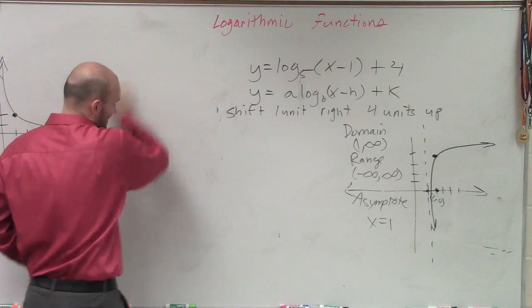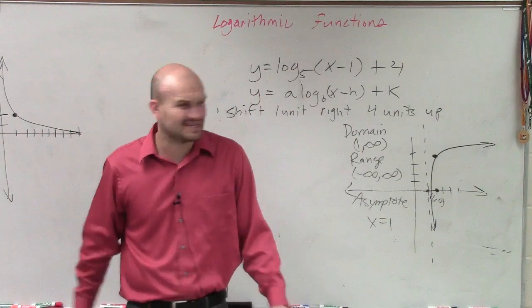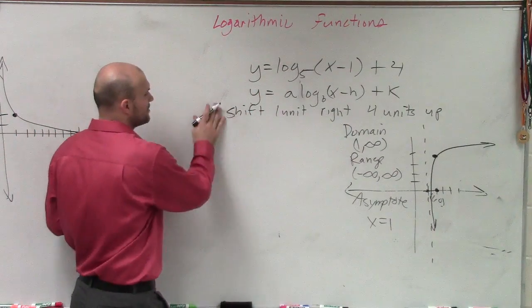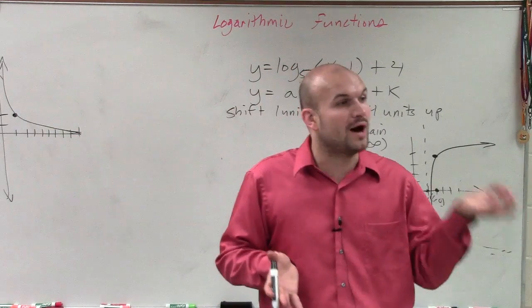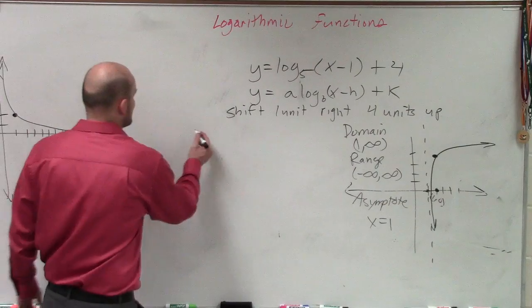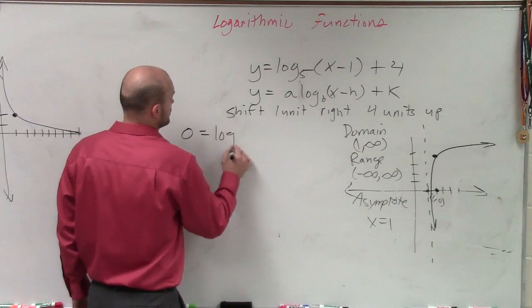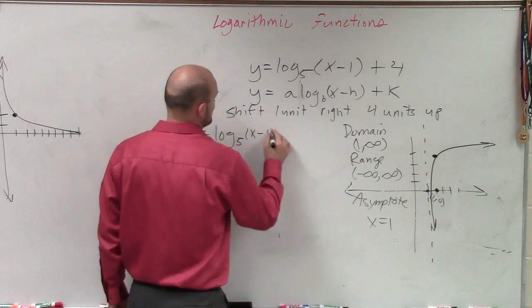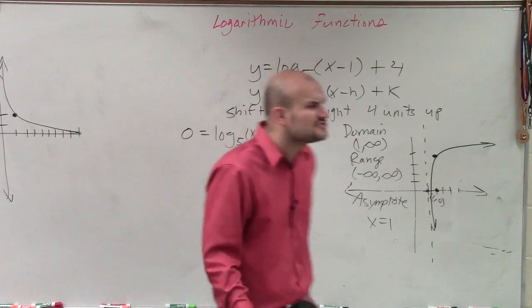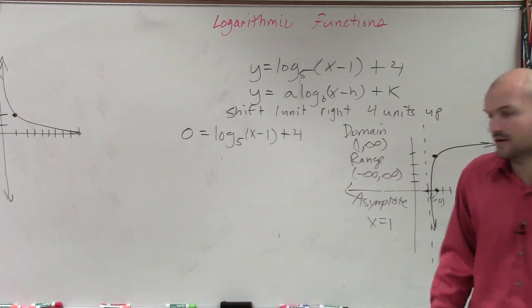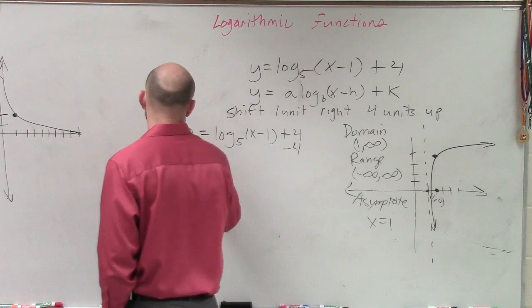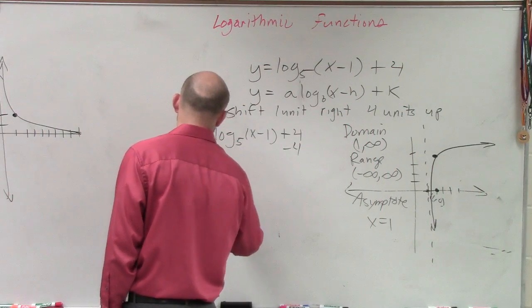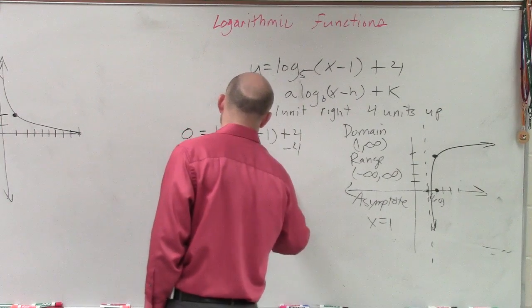So now the next thing is it says find the x-intercept. Find the x-intercept. Well, remember what we talked about determining the x-intercept. To find an x-intercept, we know that the y has to equal 0. So we say 0 equals log base 5 of x minus 1 plus 4. So how do you solve problems like this? Well, let's get the logarithm all by itself. Subtract 4, subtract 4. Negative 4 equals log base 5 of x minus 1.